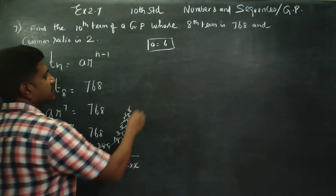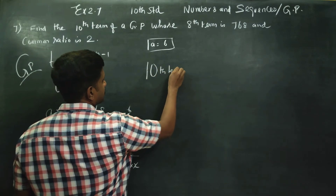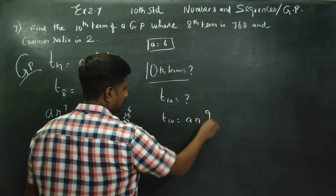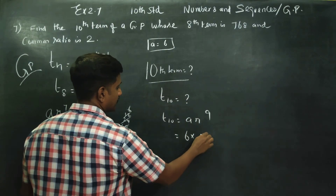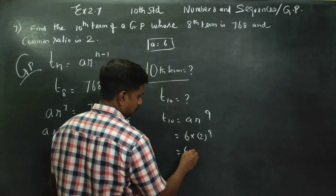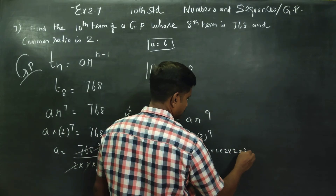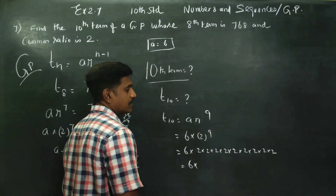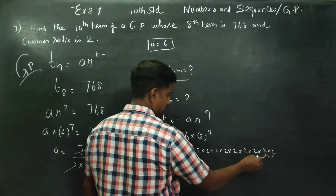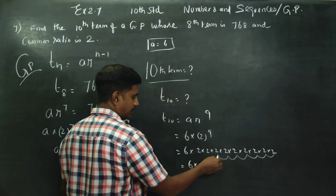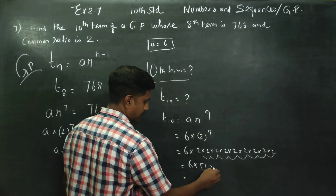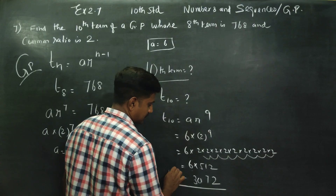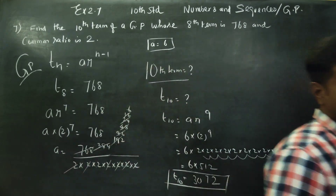Now we find the 10th term of the GP. The 10th term T10 = A × r^9. With A = 6 and r = 2, T10 = 6 × 2^9 = 6 × 512 = 3072. So T10 is equal to 3072.